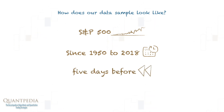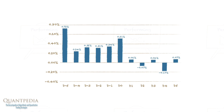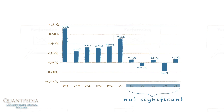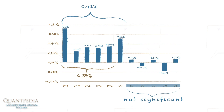We analyze stock market action five days before an election day and five days after it. Performing the analysis, we found that market action during days after elections is not statistically significant. Therefore, we focused only on the days before elections with election day included. These days show a positive drift of 0.39% on average per day, and 0.41% with election day added.